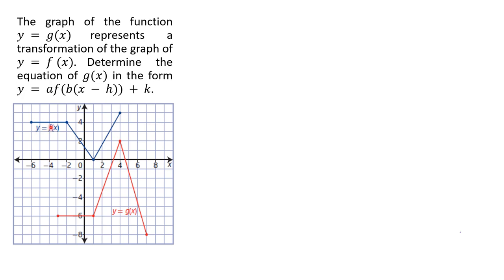The first thing to notice is that the function in blue, f(x), is being transformed into g(x) shown in red. Look carefully at how the two graphs relate. For example, the point (-6, 4) is being mapped to (-3, -6), and the endpoint (4, 5) is being mapped to (7, -8).